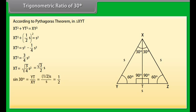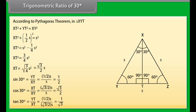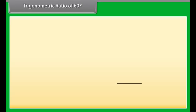Therefore: sin 30° = YT/XY = (S/2)/S = 1/2. Cos 30° = XT/XY = (√3/2 · S)/S = √3/2. Tan 30° = YT/XT = (S/2)/((√3/2)S) = 1/√3.